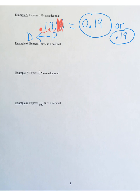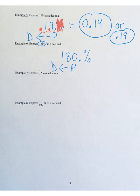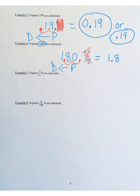Example six: express 180% as a decimal. Assume the decimal point is at the end of the number. Move it two hops to the left — hop one, hop two lands between the 1 and the 8. Remove the percent symbol and rewrite as 1.80, or simply 1.8. Final answer: 1.8.